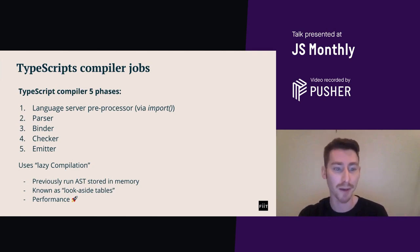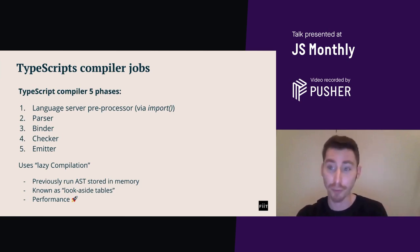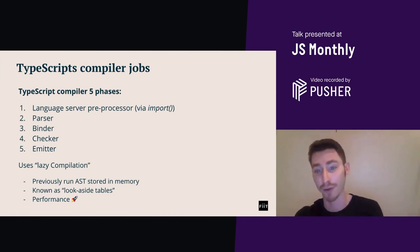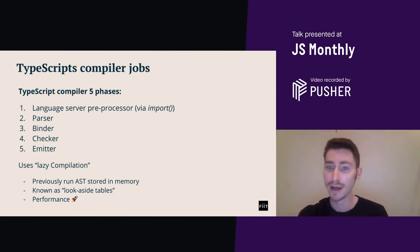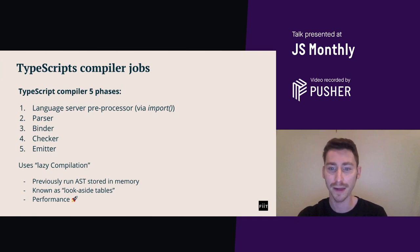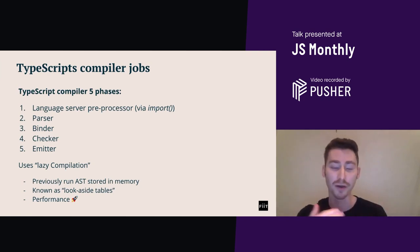TypeScript has a preprocessor which triggers the type compiler to only run over the files which have changed. This will follow any import statements to determine what else could have changed and would need to be included in the next rerun. Additionally, the TypeScript compiler has the ability to only reprocess the node tree branch or the AST graph which has changed — a technique known as lazy compilation. Previously run AST can be stored in memory, which it calls lookaside tables, and that allows for even faster compilation in the future.